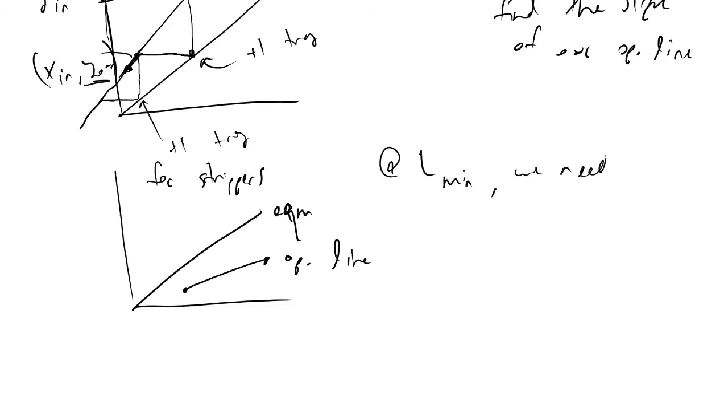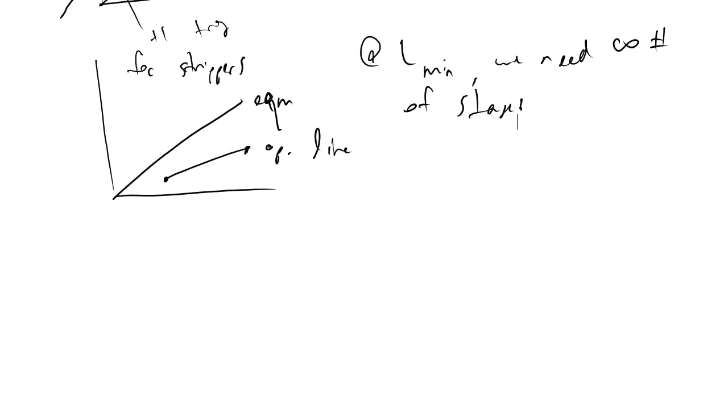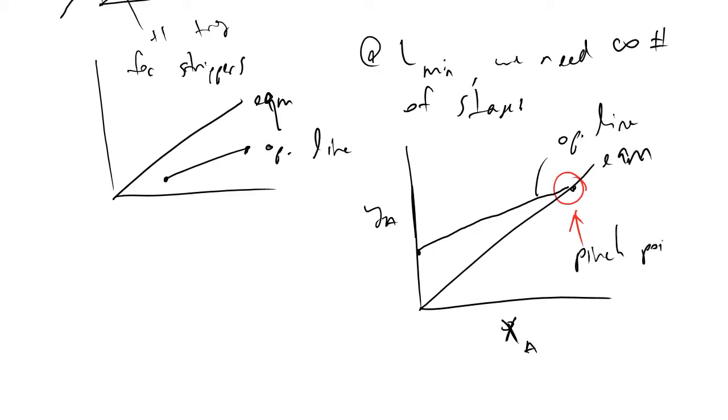And important thing to note is at lmin, we need an infinite number of stages. So if I were to draw this out graphically, switching back over to absorbers, what we have when we let our operating line touch the equilibrium line is a pinch point. And so when we encounter pinch points while we are trying to evaluate the number of trays that are going to be required, what we'll see is that in this region, infinitely many trays are needed to reach our required purity of our solvent or carrier phase.